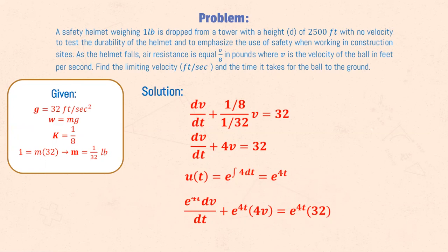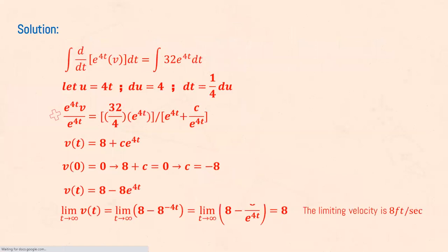We find that the integrating factor is equal to e raised to 4t. Multiplying the integrating factor to the entire equation, we can integrate this equation and isolate v. We find that the velocity is equal to 8 plus c times e raised to 4t.